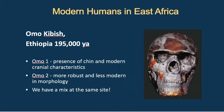Moving on, we have a site in Ethiopia called Omo Kibish that dates to 195,000 years ago. We have two specimens found there from the same time period. One has a chin and modern-looking characteristics, and one is more robust and less modern in morphology. This site is interesting because at 195,000 years ago, instead of a homogeneous modern-looking population, we have a lot of variation, with many primitive-looking characteristics still present.